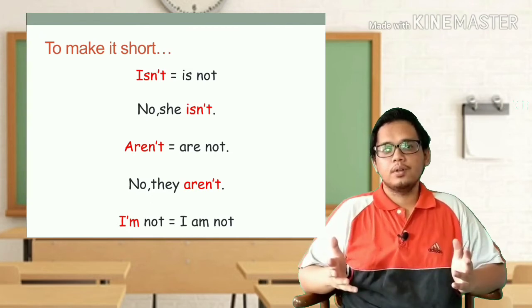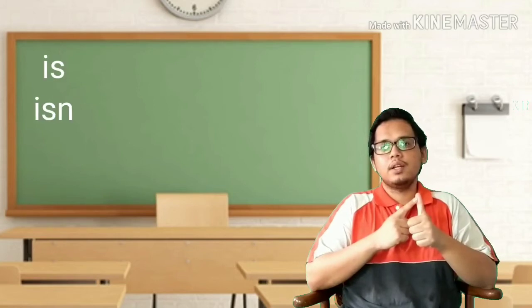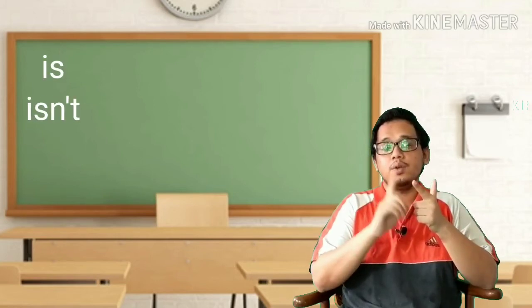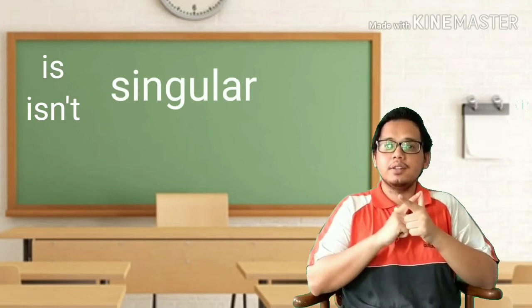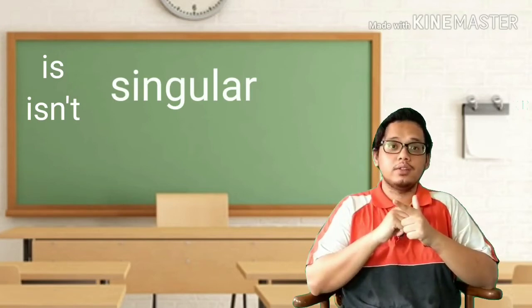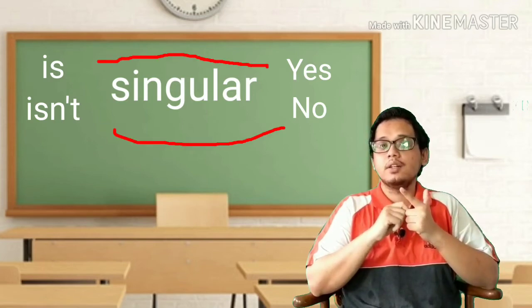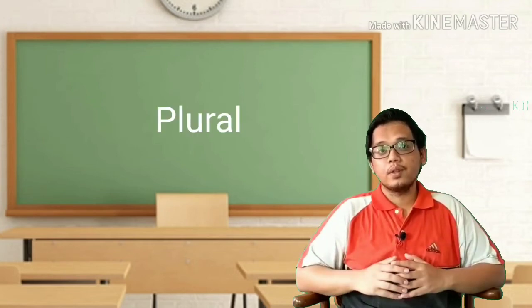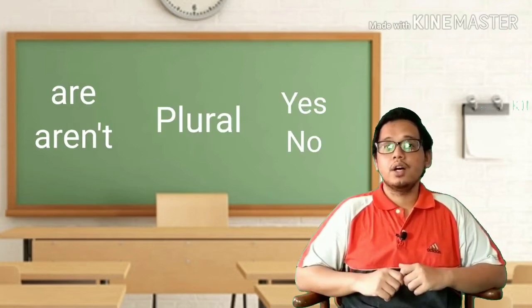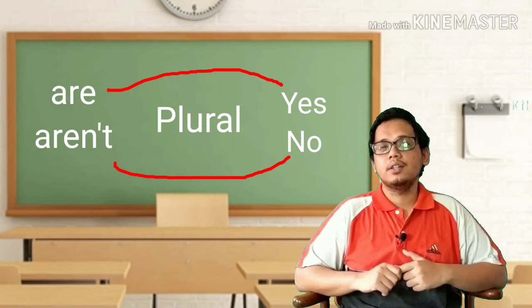So in summary: 'is' and 'isn't' — we must use for singular. 'Is' when the answer is yes, and 'isn't' when the answer is no. For the plural, we use 'are' if the answer is yes, and 'aren't' if the answer is no.